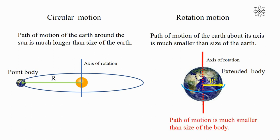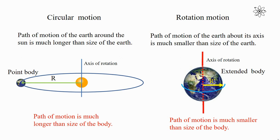For rotational motion, the path of motion is much smaller than the size of the body. But in the case of circular motion, the path of motion is much longer than the size of the body.